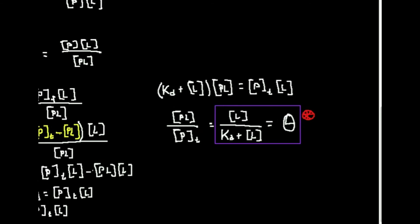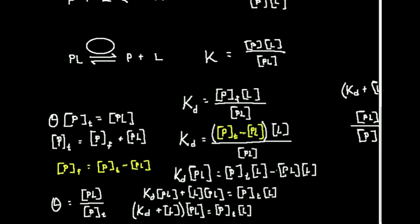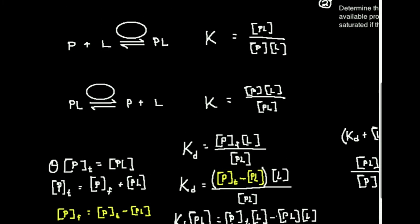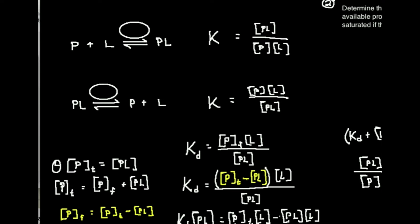Sometimes in certain classes they can ask you to derive it, so it's worth seeing where it comes from. We're going to start with the definition of KD, which we derived in the last video. KD is this expression right here — let me go ahead and box this. This is the expression for KD, and we're going to start with this.